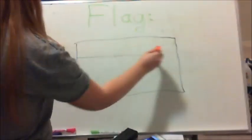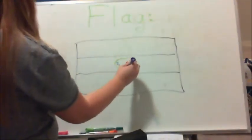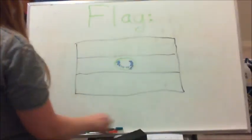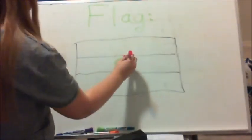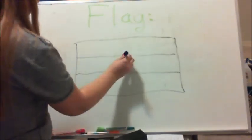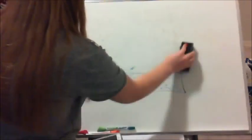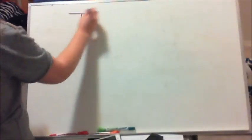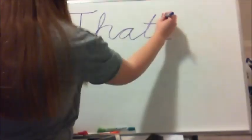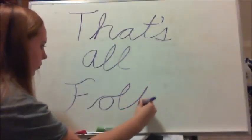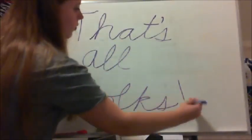Now I'm going to attempt to draw the flag. I knew if I drew it in perfect detail — since it is a pretty detailed flag — you wouldn't be able to see it very well because of the low camera quality. So basically I'm just drawing blobs of color where more specific stuff is. That's all, folks! Thanks for watching my project for Spanish 3, which was on El Salvador.